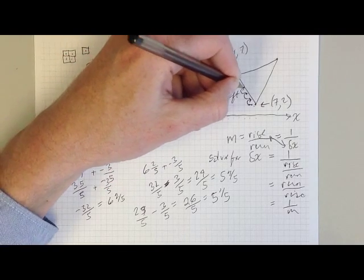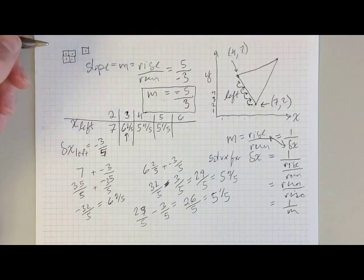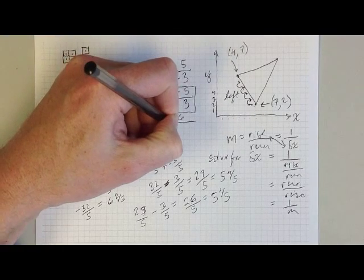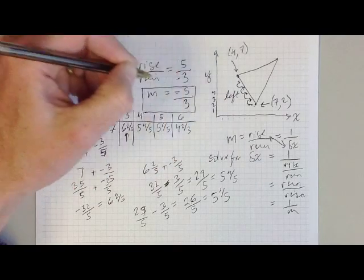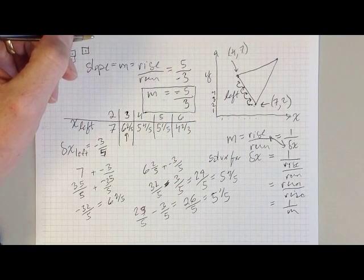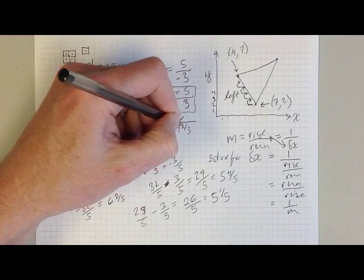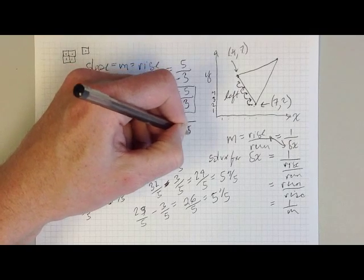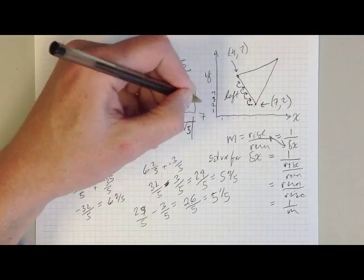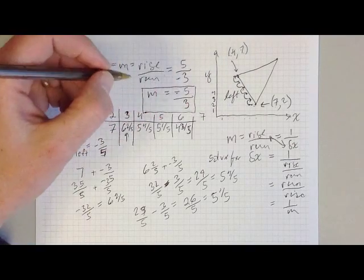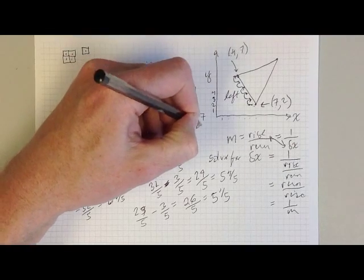Moving up to scan line number 6, I simply subtract 3 fifths again, and in that case I get 4 and 2 fifths. Now I get 4 and 3 fifths. And then when I move up to scan line number 7, I subtract 3 fifths again, and I end up with 4.